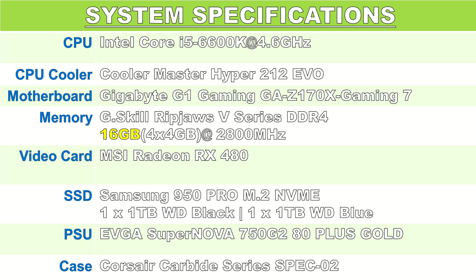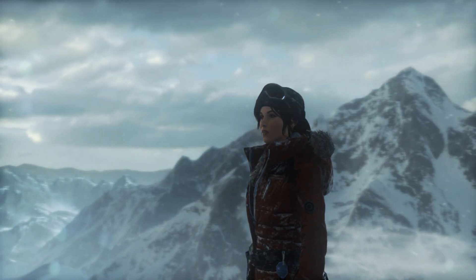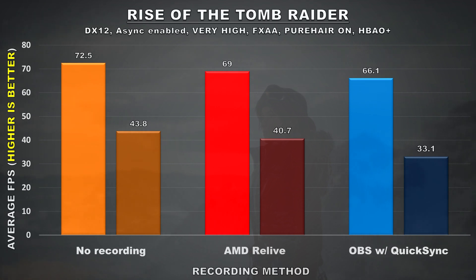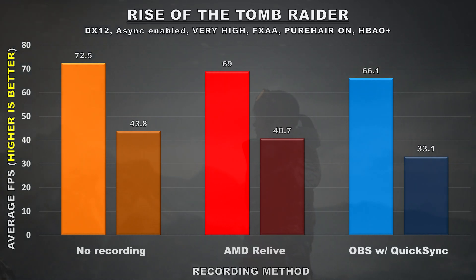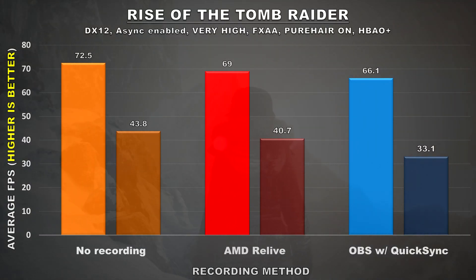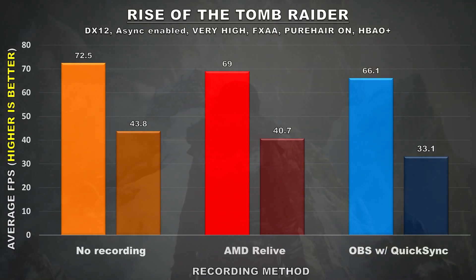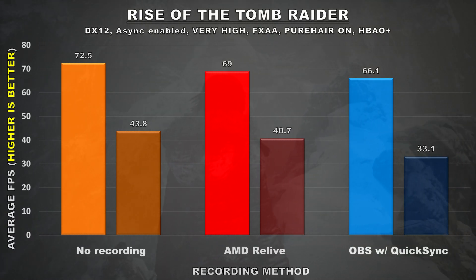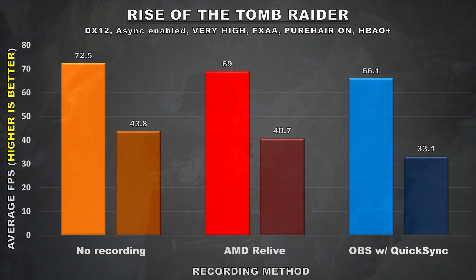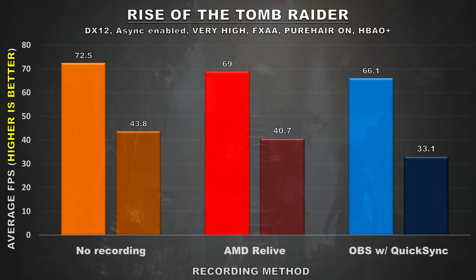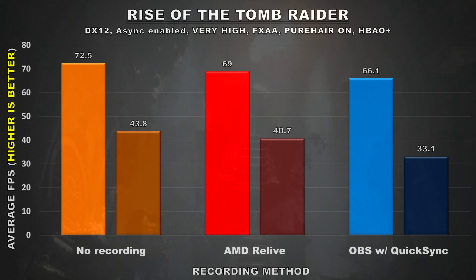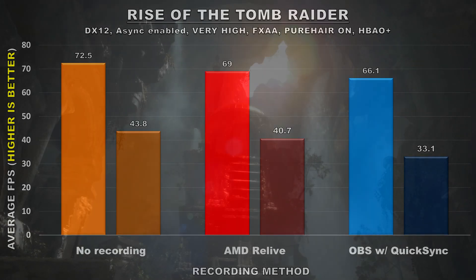Now that we've gotten all that out of the way, let's jump into the benchmarks. Starting off with Rise of the Tomb Raider, without recording we get an average of 72.5 FPS with a minimum of 43.8. When recording with Relive, the average drops to 69 FPS and the minimum to 40.7 — a pretty small difference. With OBS QuickSync the difference is larger: the average drops to about 66.1 FPS, roughly a 6 FPS difference, and the minimums were impacted by about 10 FPS. So for this title, Relive attained closer performance than OBS with QuickSync.